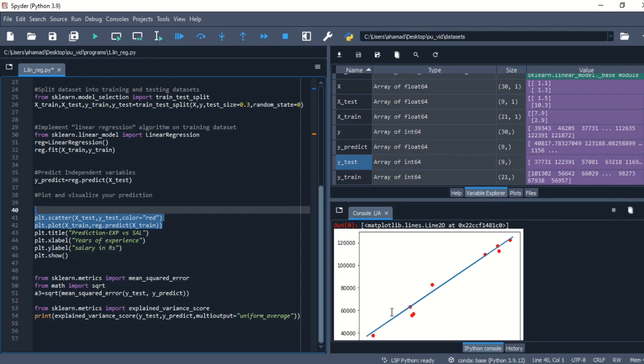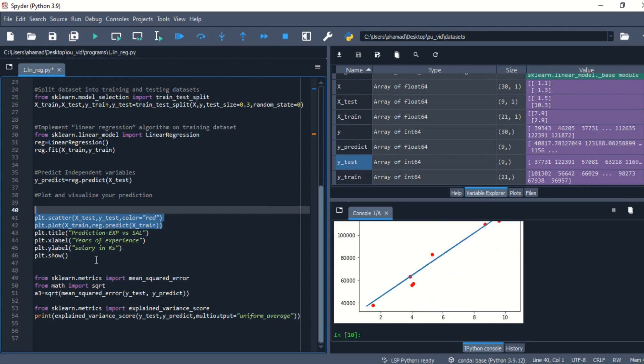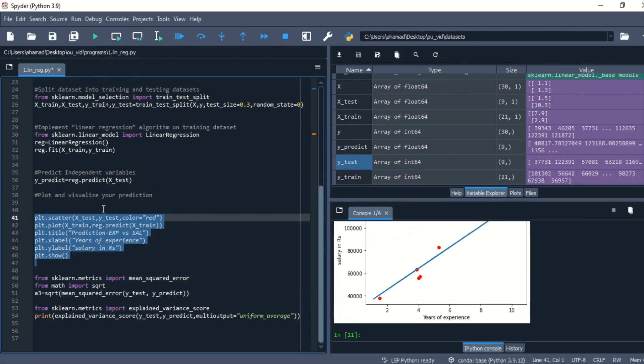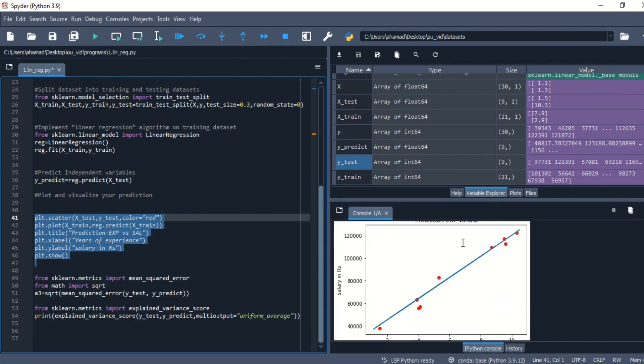Now here you can see, almost all are near to the best fit line. Let me add title to the plot and give the labels to the x and y axis for your clear understanding. See?